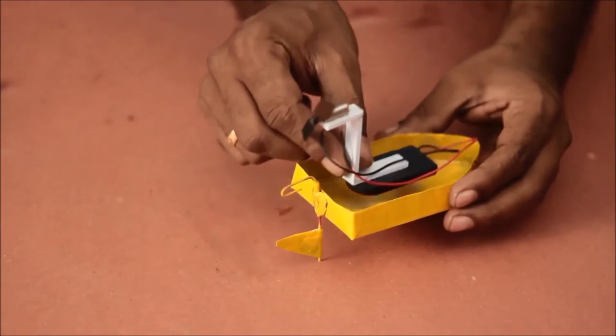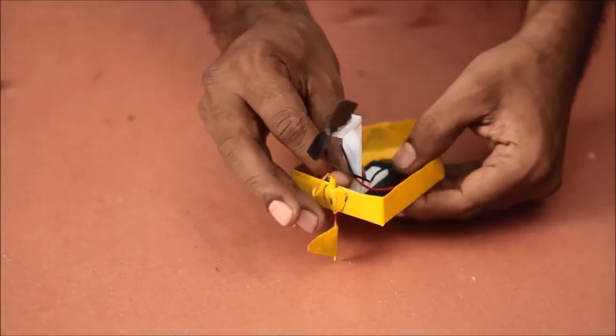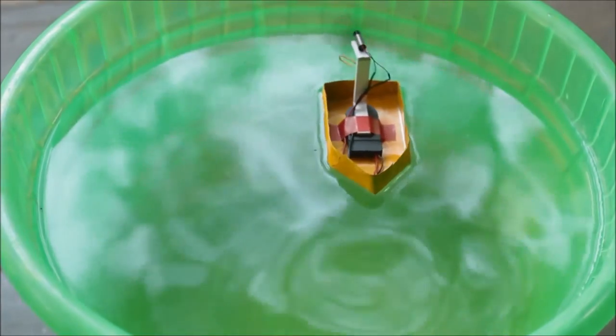Some epoxy to seal the joints and a coat of spray paint would make this project more interesting. With that done, the motor assembly is glued in the hull and the boat is ready for its maiden voyage. I also added a rudder to steer the boat.